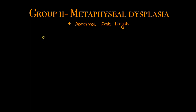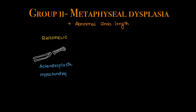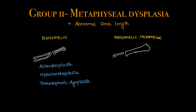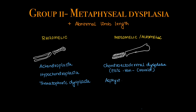Coming to Group 2, where the metaphysis is involved — and as the metaphysis is the growth zone, it causes abnormal limb length. Types include rhizomalic metaphyseal dysplasia, which can be achondroplasia, hypochondroplasia, or thanatophoric dysplasia. There is also mesomalic or acromalic metaphyseal dysplasia with shortened mid-segments — that's chondroectodermal dysplasia, also known as Ellis-Van Creveld syndrome, and asphyxiating thoracic dysplasia.